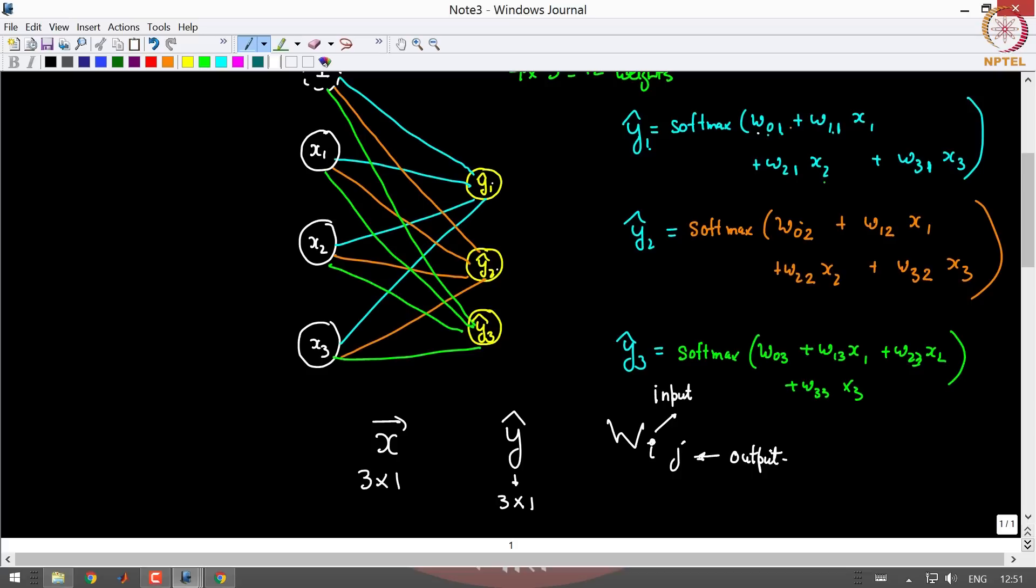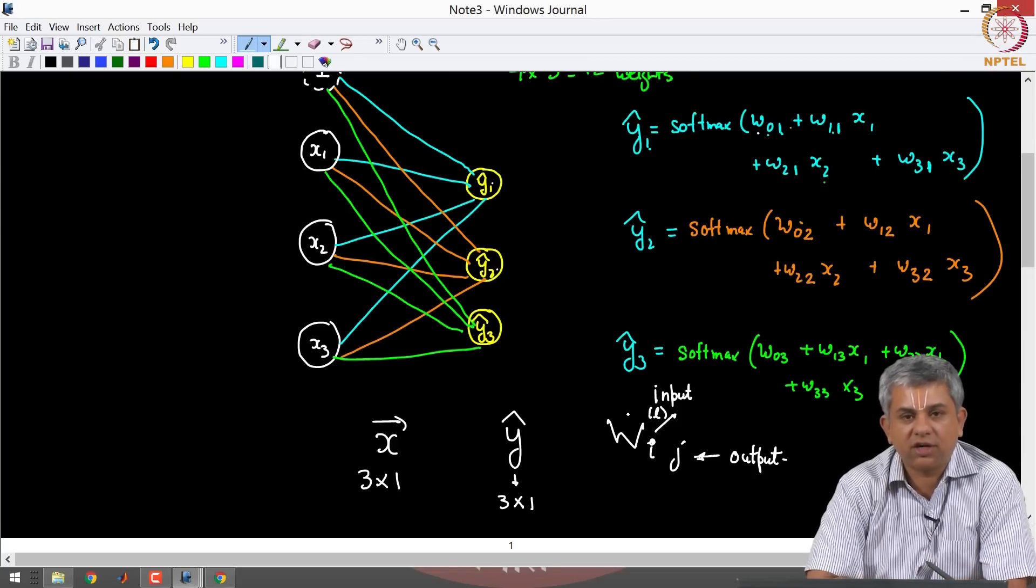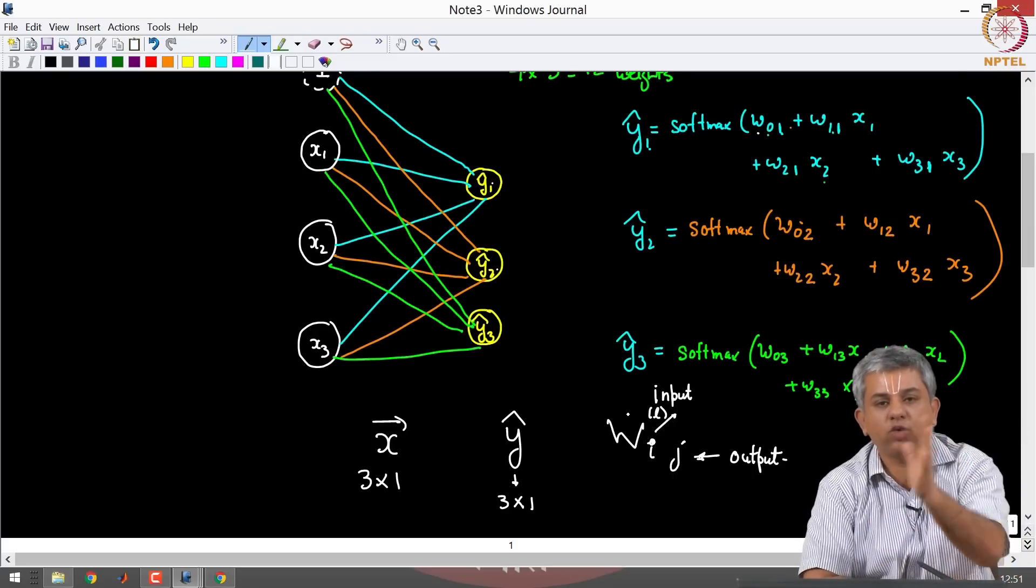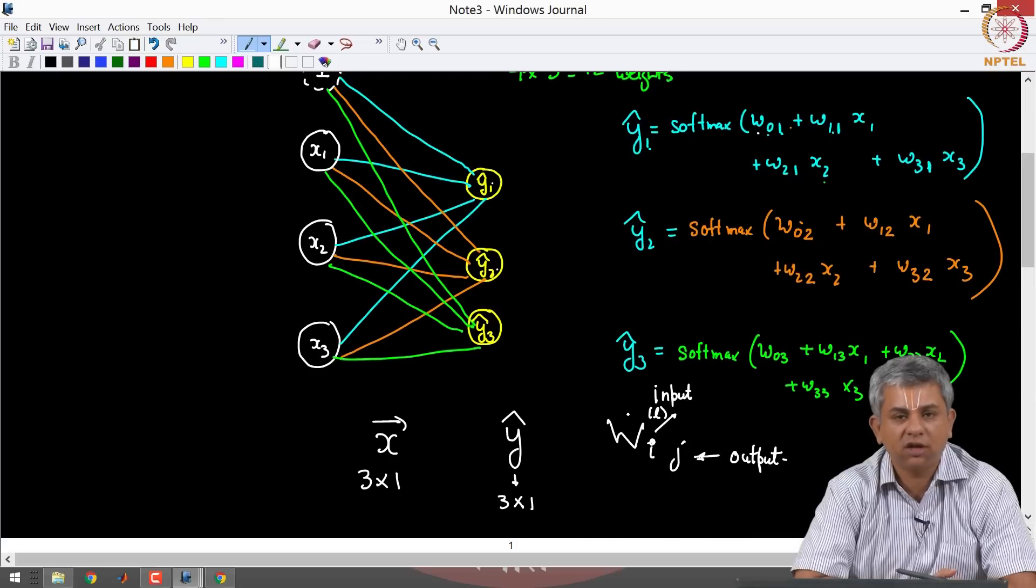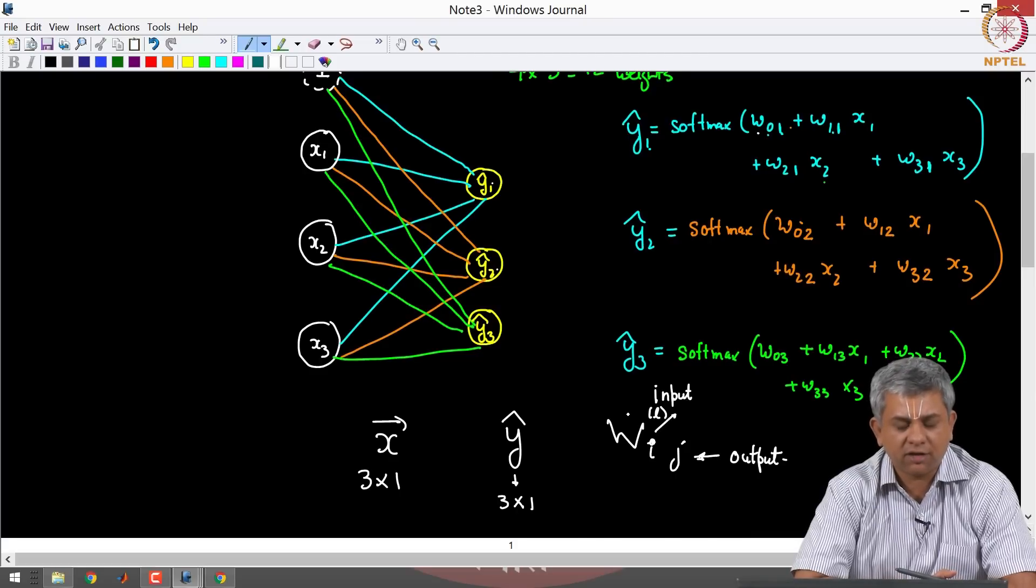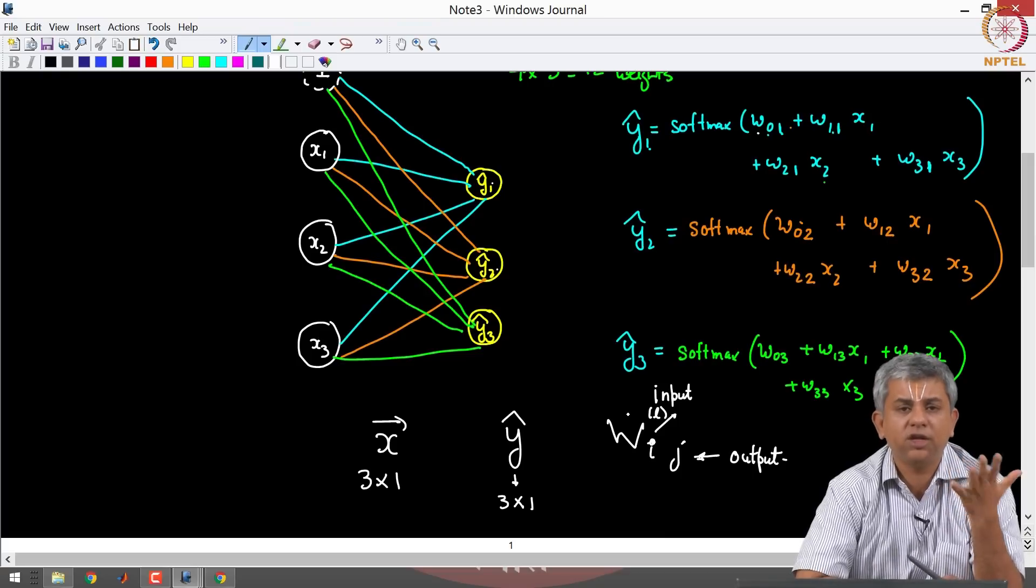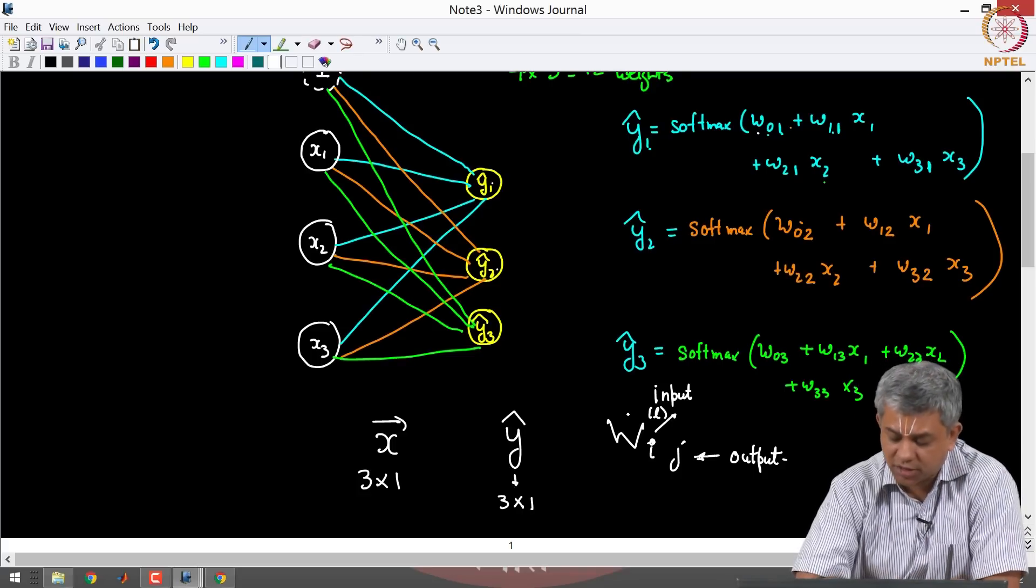You had also seen in the earlier video with XOR that you could have more than one layer. In that case, typically we add an L here which denotes the level. So you could have WIJ1, WIJ2, WIJ3, etc. So you will have multiple weights. So this is the large number of weights. As you will see in the next videos, in the next week, when we come to convolutional neural networks, you have millions and millions of parameters in usual practical neural networks that exist today, which is why they are extremely powerful.